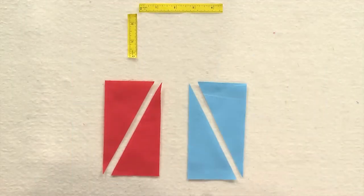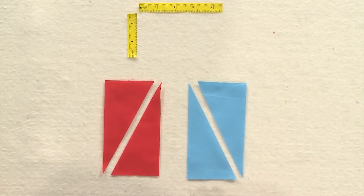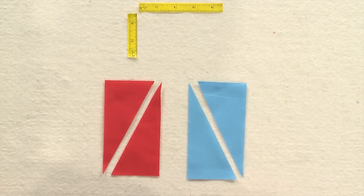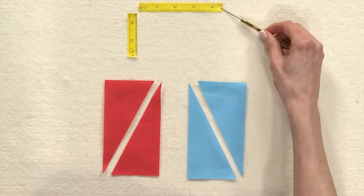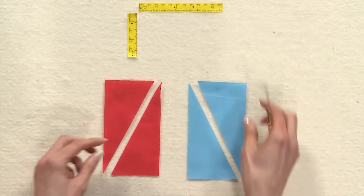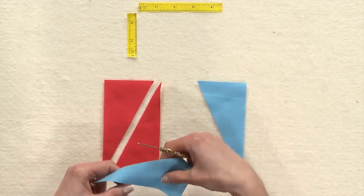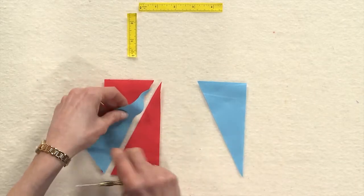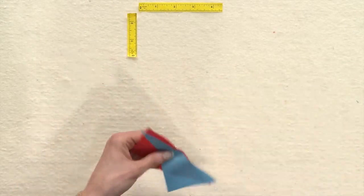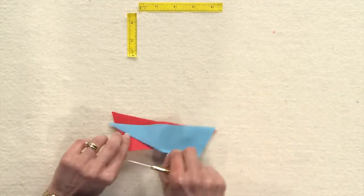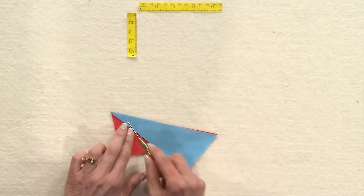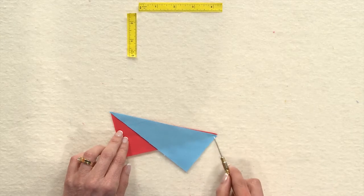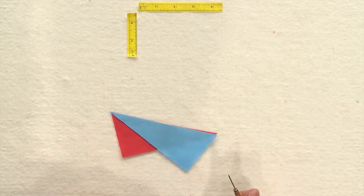This block also has some triangles that can be tricky to sew together. The unfinished size when the triangles are sewn together needs to be two and a half inches by four and a half inches. And a lot of people think that just lining up the triangles with the points end to end from here to here will give you your perfect rectangle when they're sewn together.